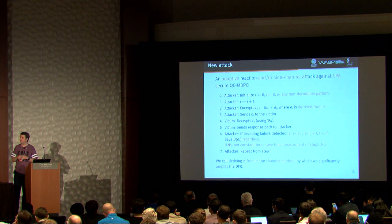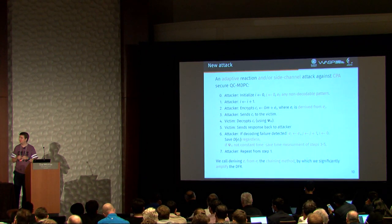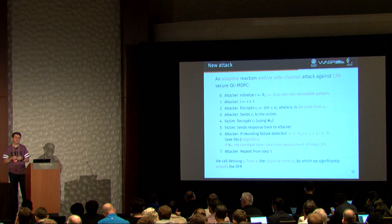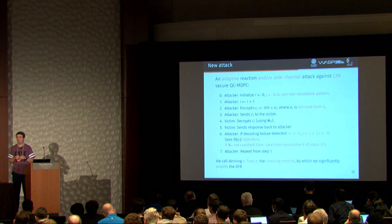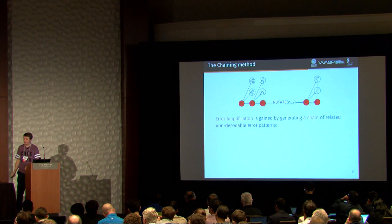And we call this deriving of the error pattern, the chaining method. And we use it to amplify the decoding failure rate in order to get more information that we need to perform the attack.